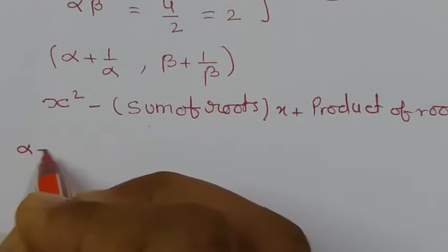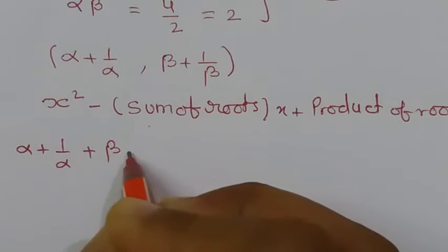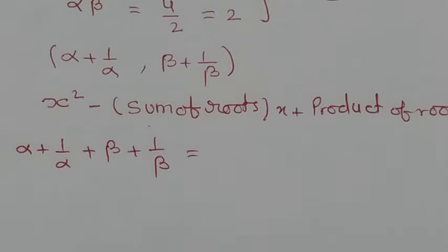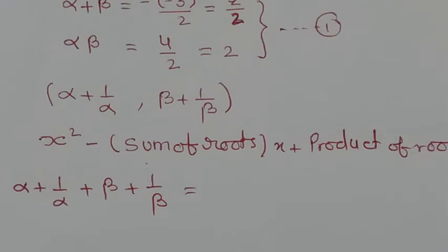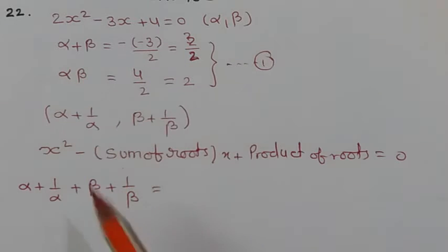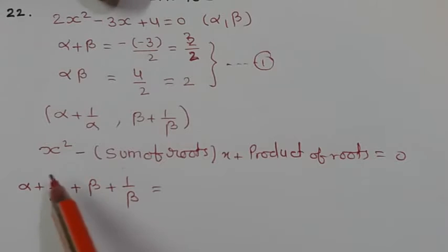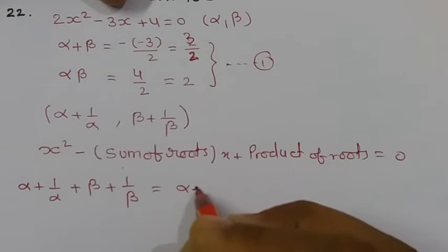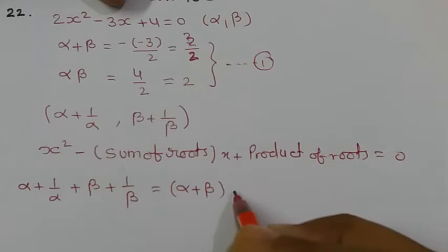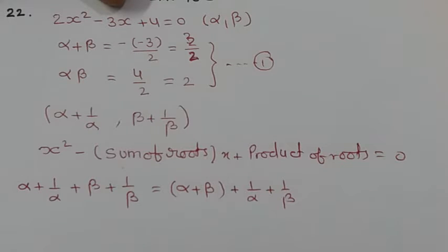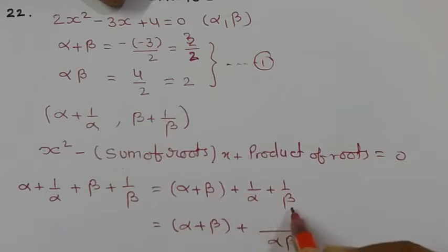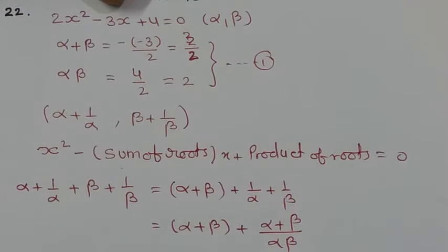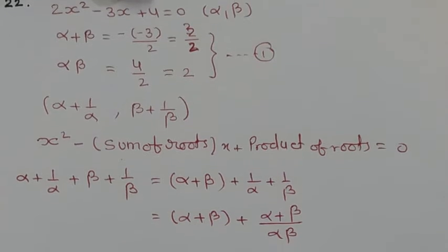Sum of new roots = first root + second root = (alpha + 1/alpha) + (beta + 1/beta). Taking LCM, this becomes (alpha + beta) + (alpha + beta)/(alpha · beta). We now convert this expression into the form of alpha + beta and alpha · beta, substituting their known values: 3/2 + (3/2)/2.